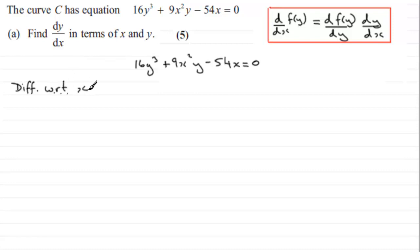So we differentiate this equation with respect to x. The first term is a function of y, so we use the principle of implicit differentiation. We differentiate this with respect to y and then multiply it by dy/dx.